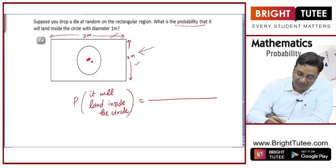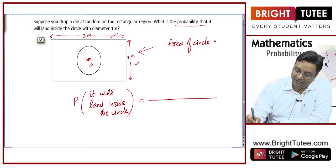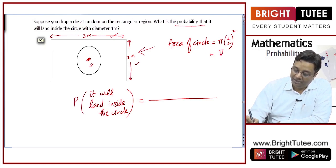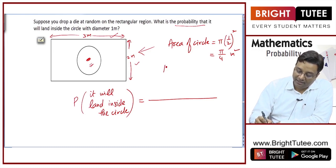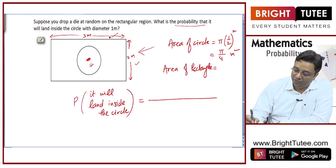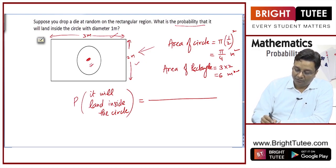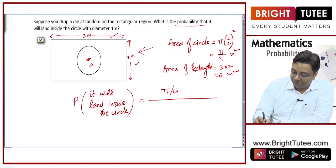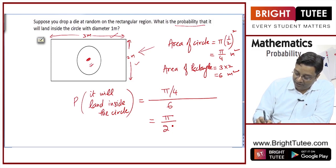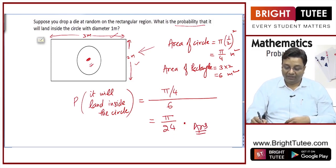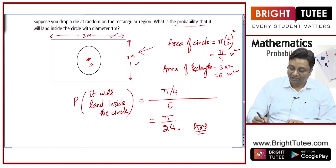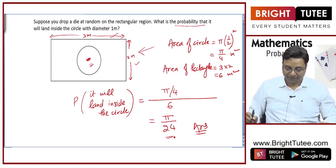If it falls in this area, it will be a favorable case. The area of the circle is π r², and the radius is 1/2, so this is equal to π/4 square meters. The total area — area of rectangle — is length times breadth, that is 3 times 2, equal to 6 square meters. So the favorable area is π/4 and the total area is 6. Therefore the probability is π/24. Probability will not have any unit — you cannot write square meters or anything because this is a dimensionless number.